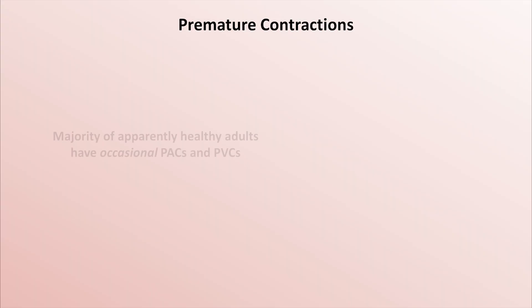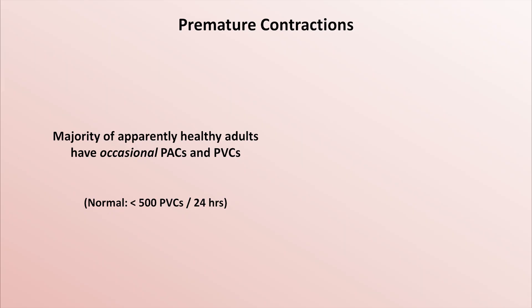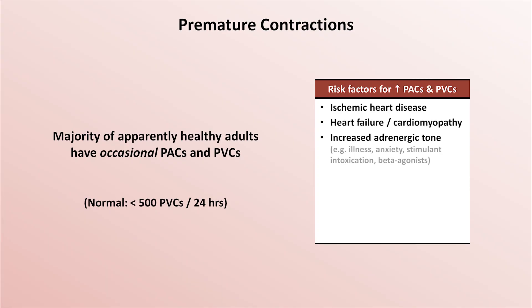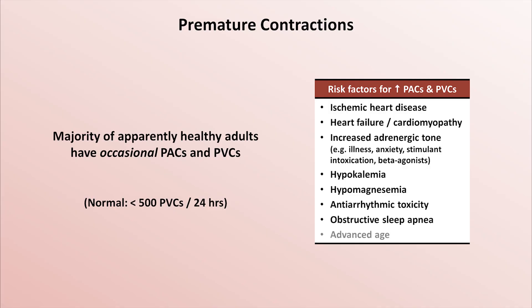Importantly, PACs and PVCs are not necessarily pathologic. In fact, the majority of apparently healthy adults have occasional premature beats. The upper limit of normal for PVCs is sometimes cited as less than 500 per 24-hour period. The upper limit of normal for PACs doesn't have quite the same degree of consensus, but it's probably roughly similar. Some risk factors for an increased frequency of PACs and PVCs include ischemic heart disease, heart failure or any form of cardiomyopathy, states of increased adrenergic tone such as acute illness, anxiety, stimulant intoxication, and the use of beta-agonist medications like albuterol, hypokalemia and hypomagnesemia, antiarrhythmic toxicity, obstructive sleep apnea, and advanced age.